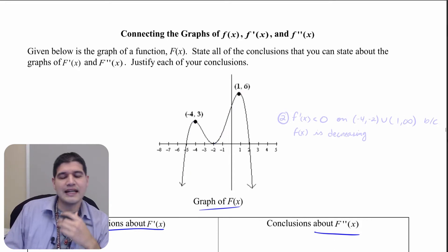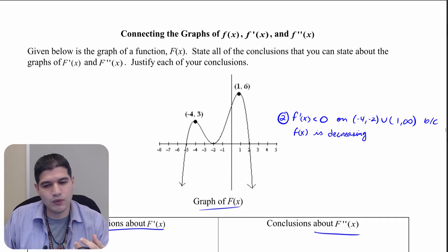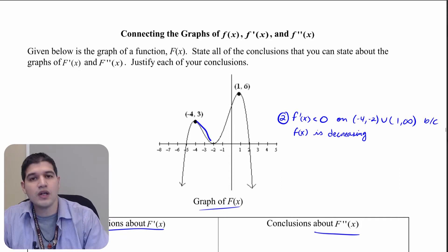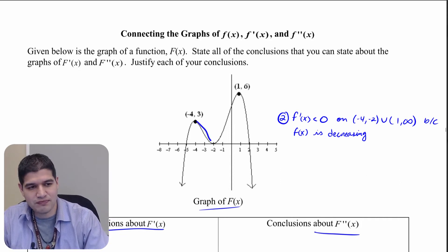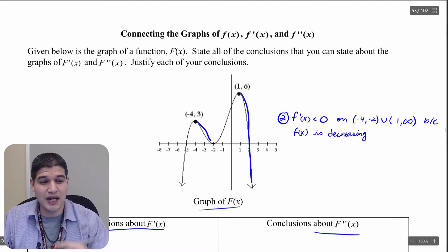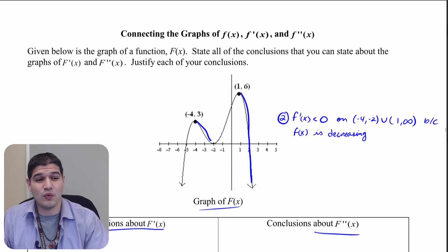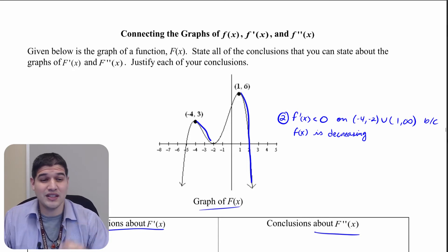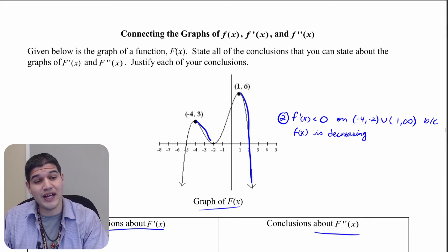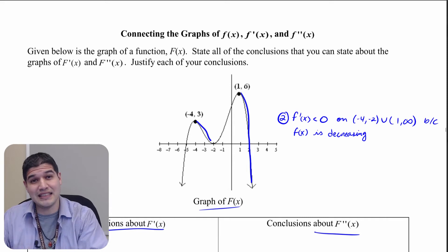The second thing we know — you can make these conclusions in any order — is that f prime is going to be negative, less than zero, on the intervals between negative 4 and negative 2, and 1 to infinity. The reason we know that is because f is decreasing on those intervals.